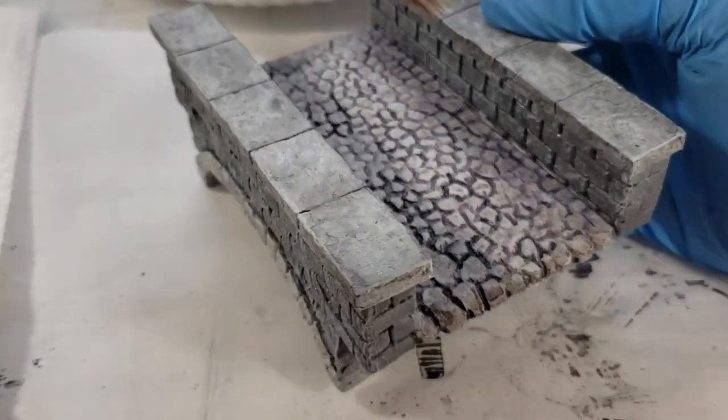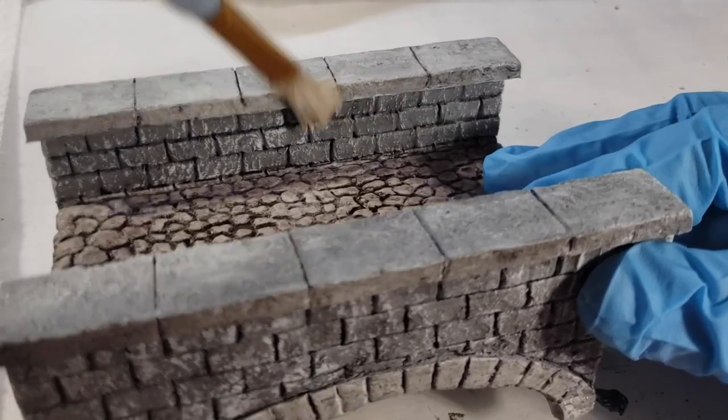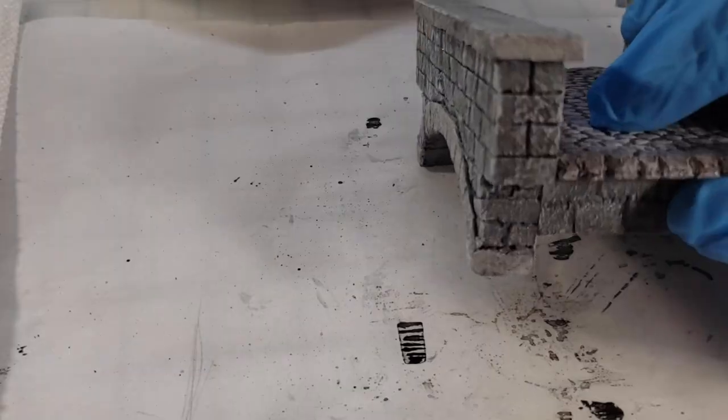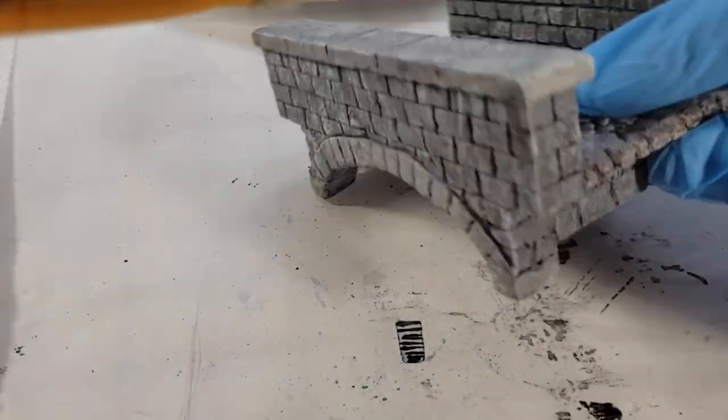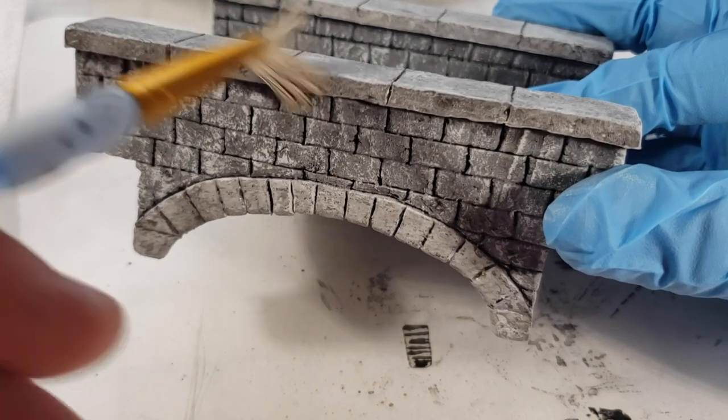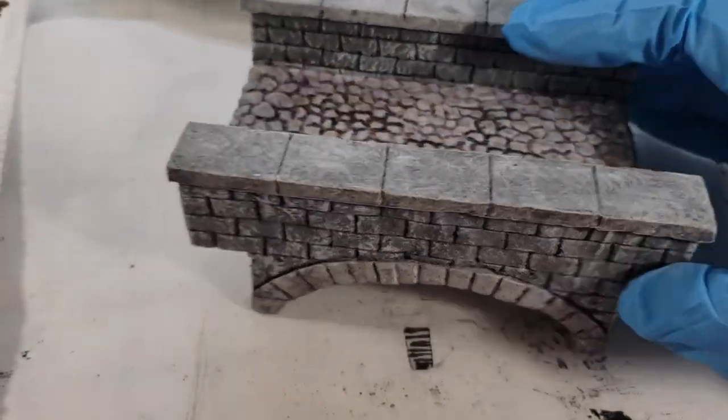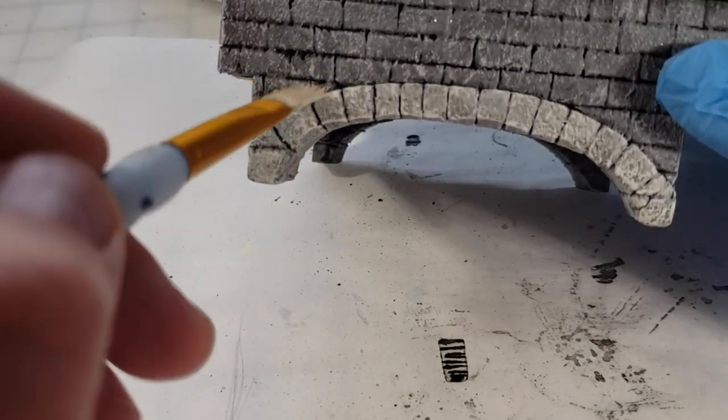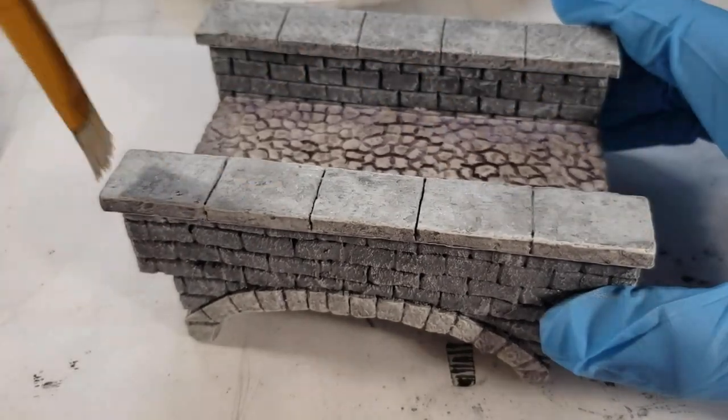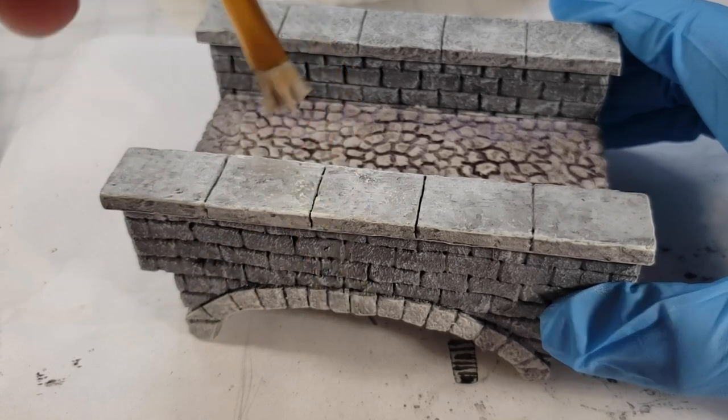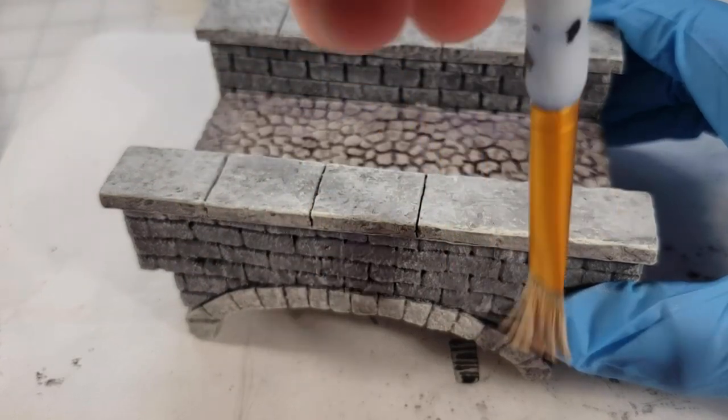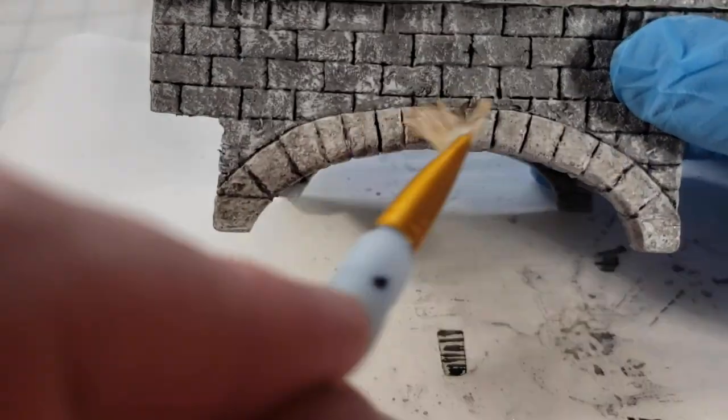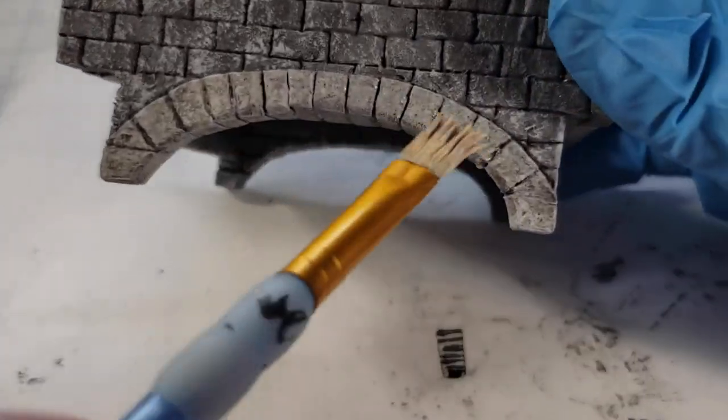You'll still be able to see the differences particularly on the edges and raised surfaces. I'm taking special care not to hit the brick work with the vanilla as I want my two colors to stay defined and separate but complimentary. Don't forget those archway stones. Got to keep those popping too.